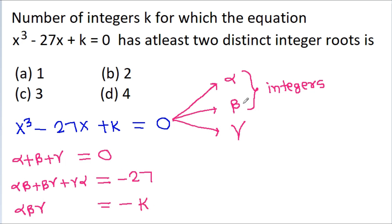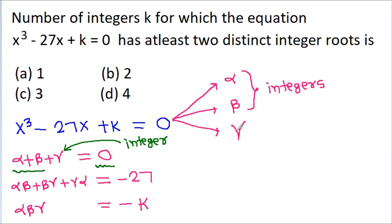We have alpha and beta as integers, and since alpha + beta + gamma = 0 and 0 is also an integer, gamma must also be an integer. So all three roots alpha, beta, gamma are integers. But we must keep in mind that all three cannot be equal, because we are given at least two distinct integer roots.